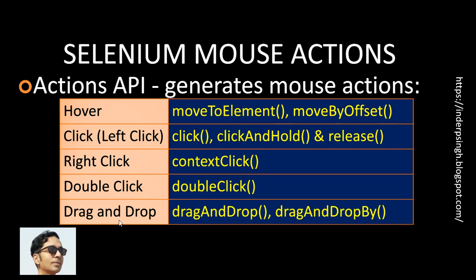For drag and drop in Selenium, you can call the drag_and_drop method, which moves to the source web element, clicks and holds it, then moves to the target web element and releases the mouse button. Another way to do drag and drop is to call the drag_and_drop_by method, which is useful when you don't have a target element — it holds the source element and drops it by an x and y offset.